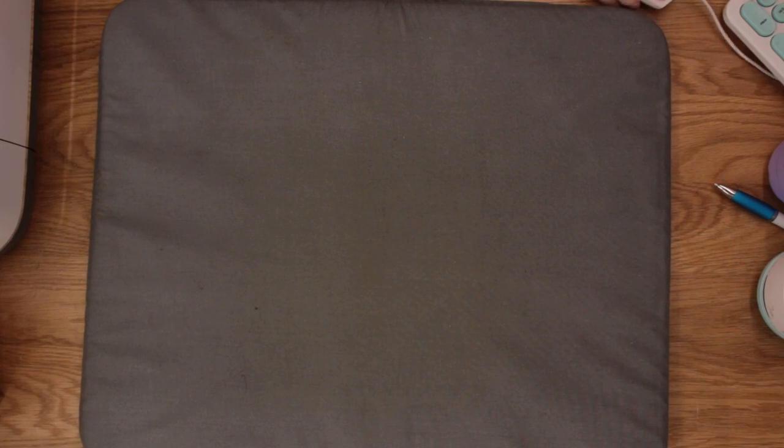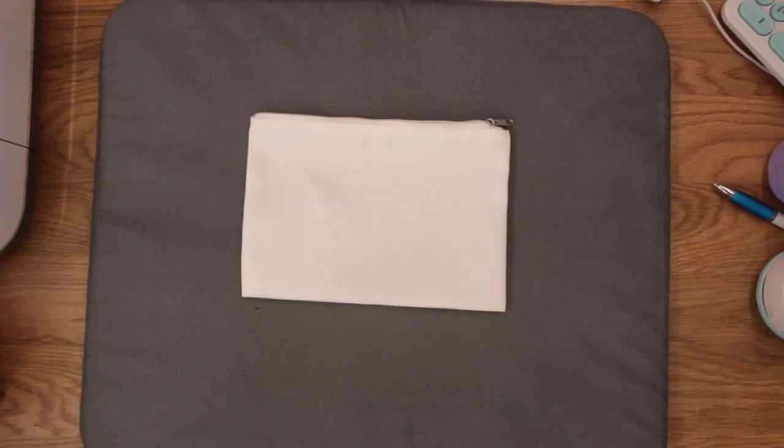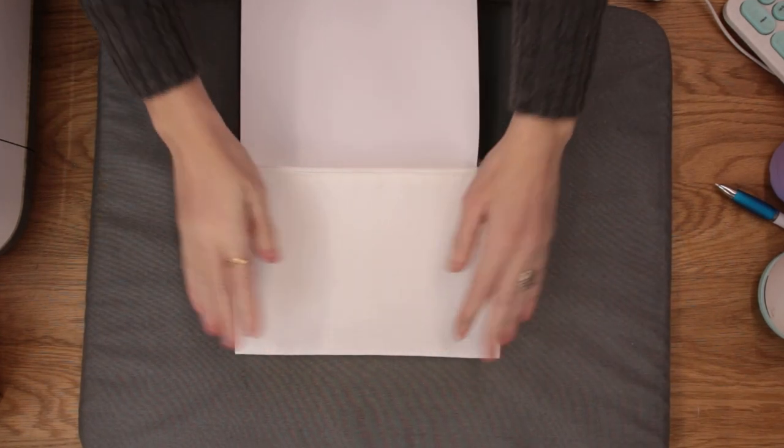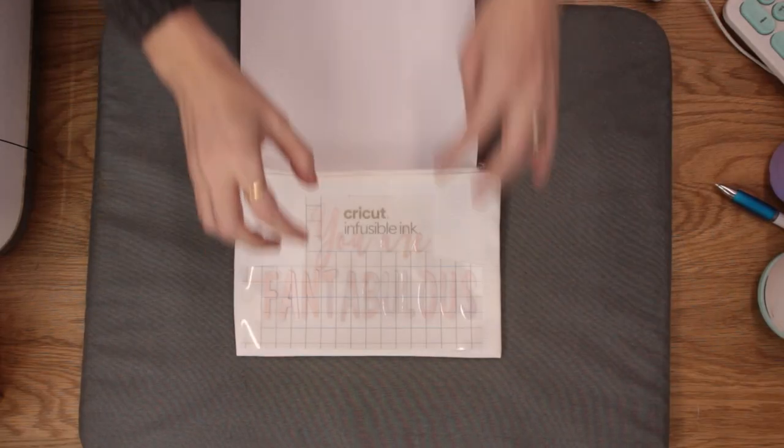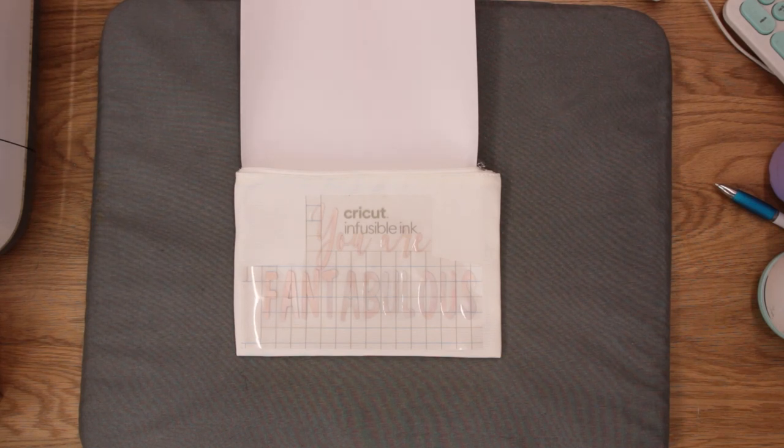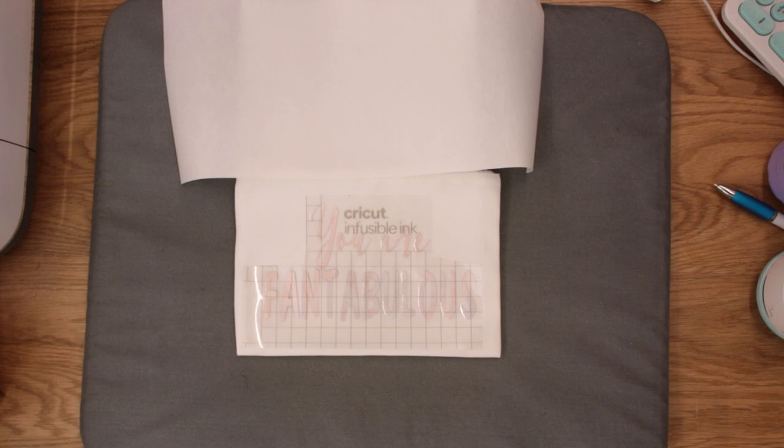So first things first, I'm going to put my EasyPress mat down. I've then got my cosmetic bag. And in that, I'm just going to put some card. That's just to prevent the ink seeping through. I'm then going to put my infusible ink down onto my item. Now, a couple of things. Your EasyPress needs to be larger than your design. The reason being is you can only heat this once. I see lots of people layering it. I layer it, but I layer it so that I can press in one go. But I see lots of people going in with multiple presses, but no one actually says how that affects the ink.